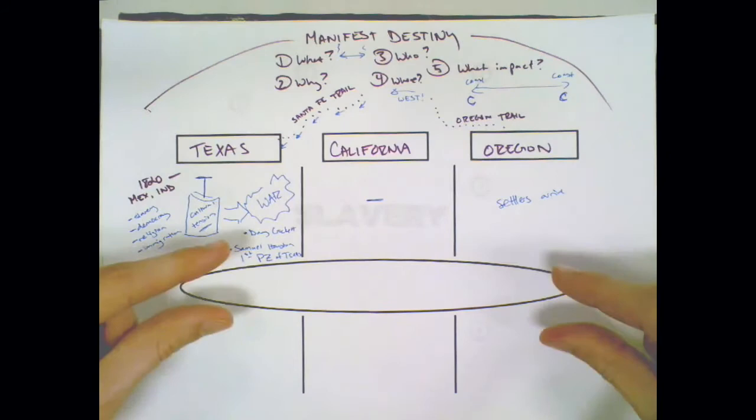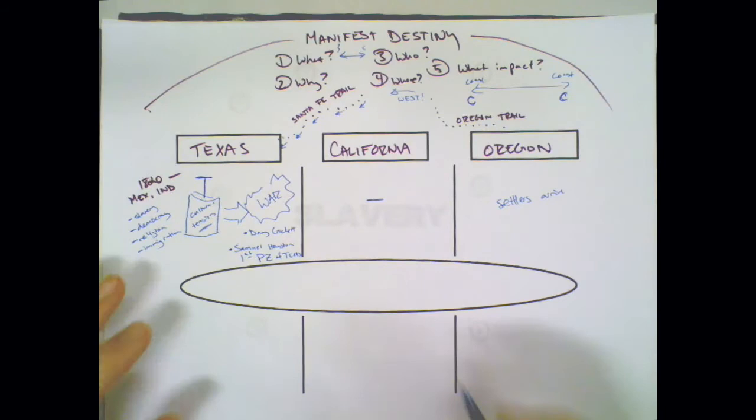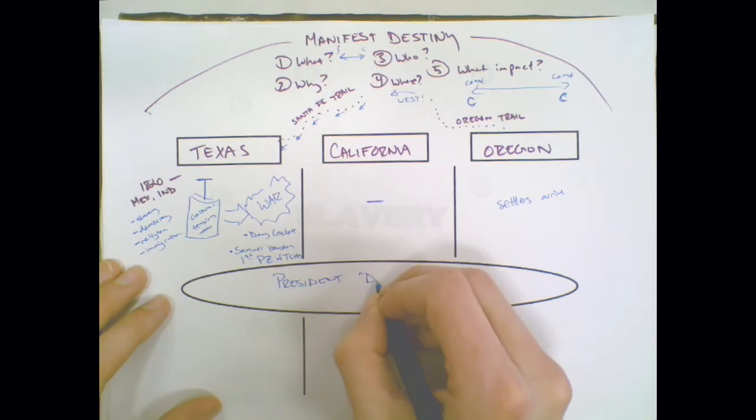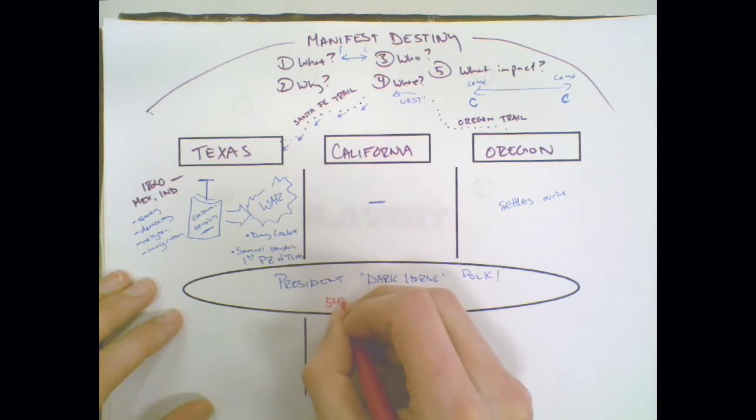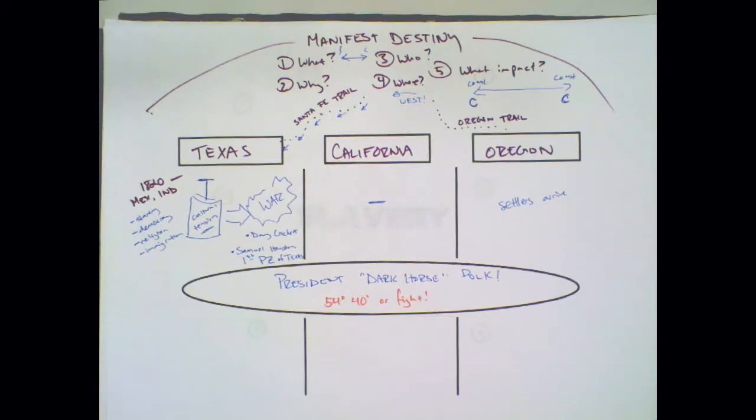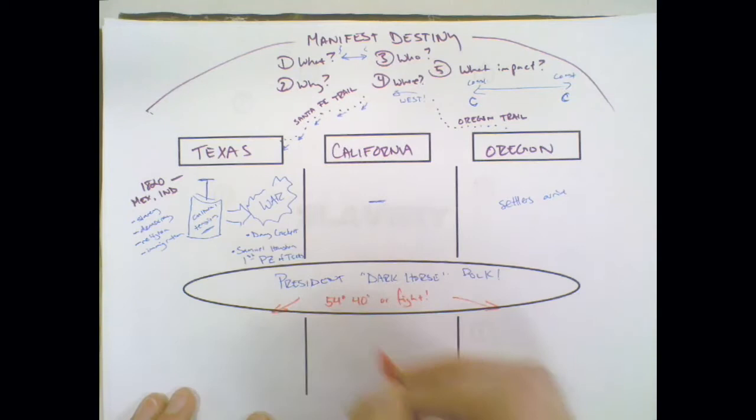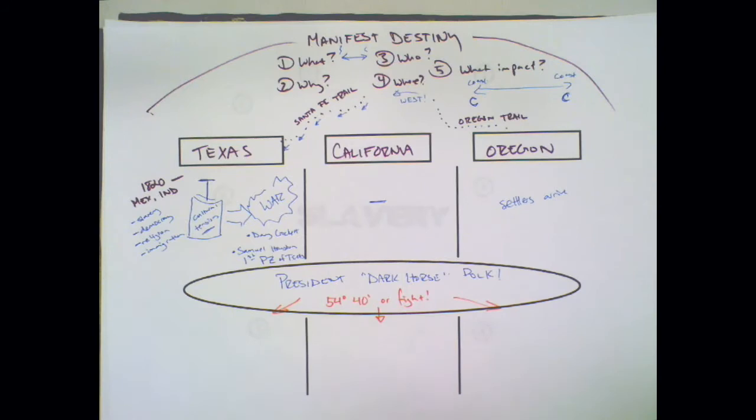While this is happening, not a lot is going on in California. In Oregon, settlers are arriving. These events bring us to the presidential election of President Dark Horse Polk, and President Polk runs with the campaign slogan of 54-40 or fight, meaning he is going to annex all of Oregon. He also promises to annex Texas and California.